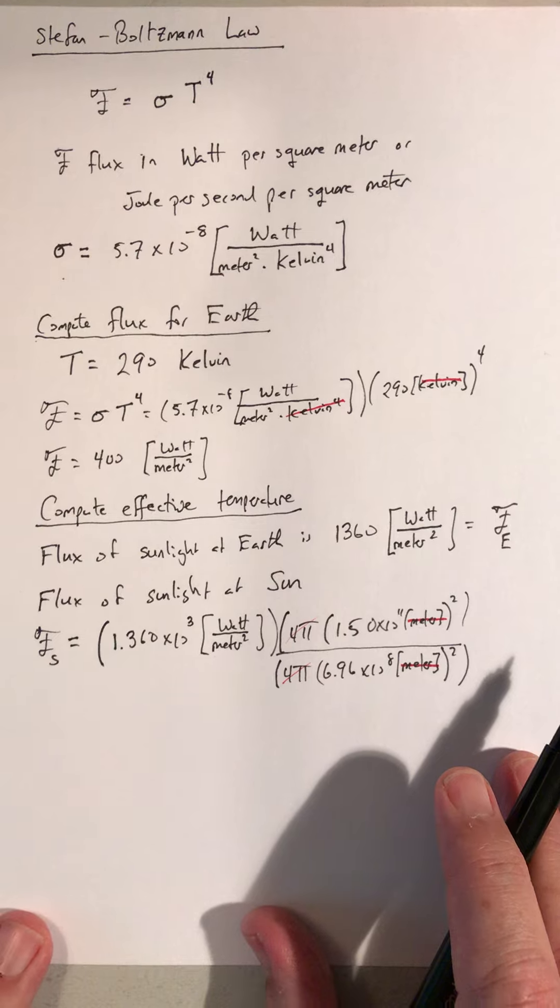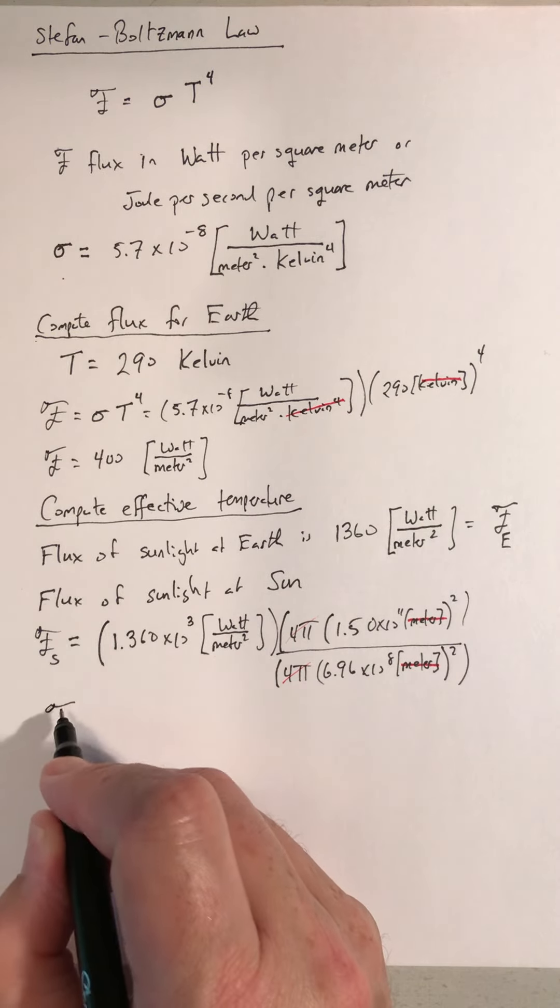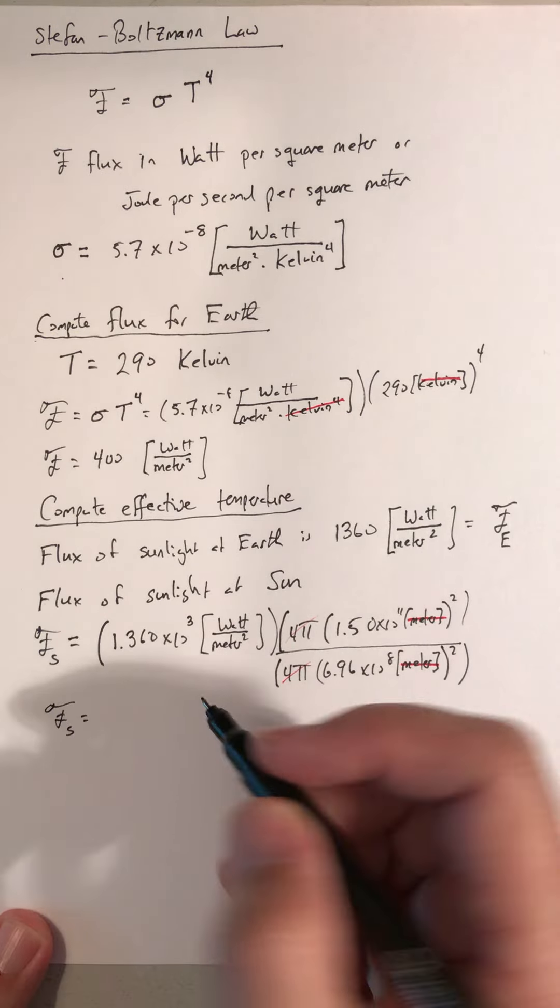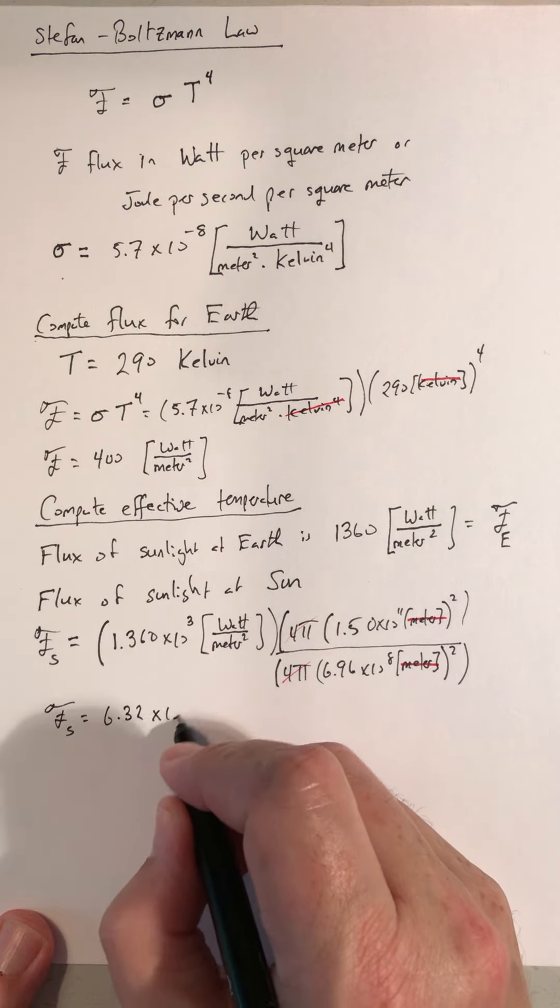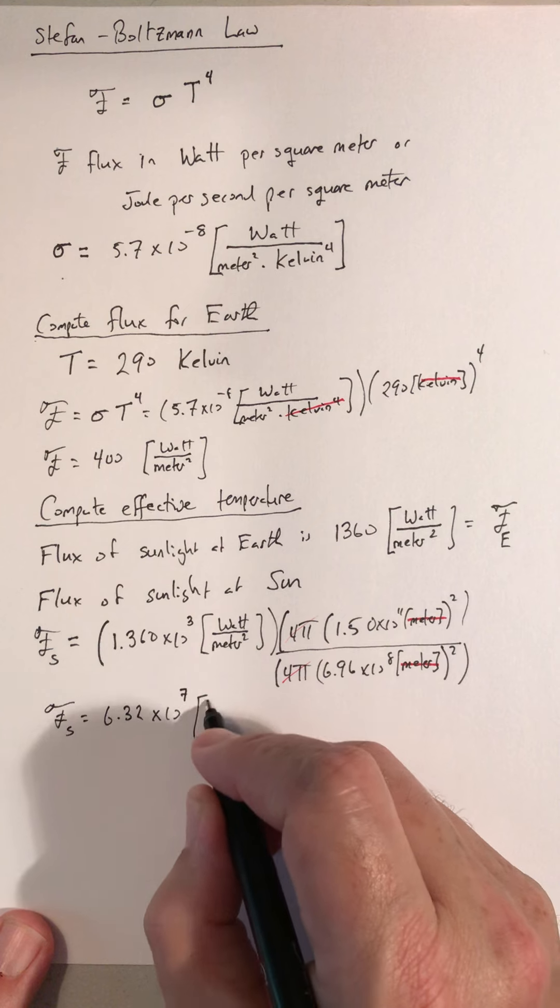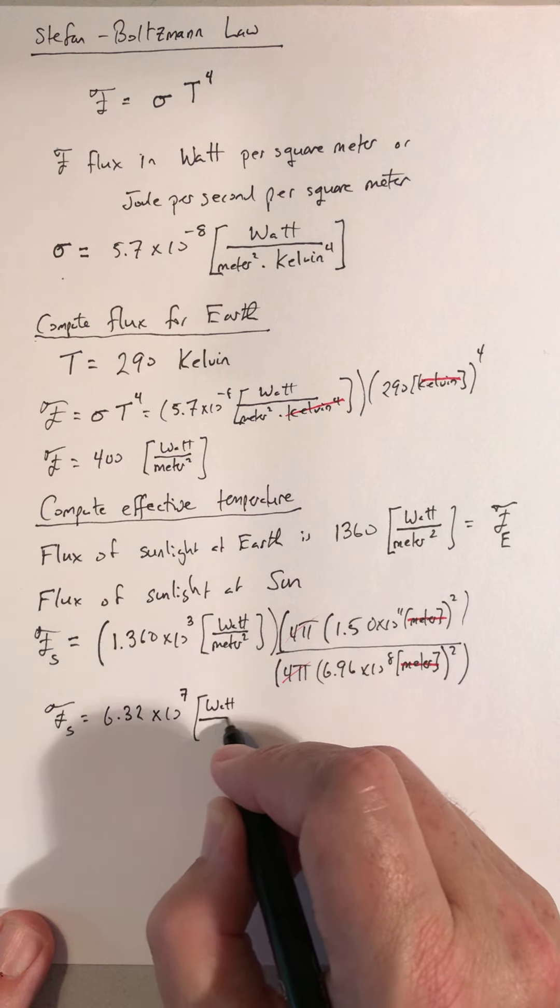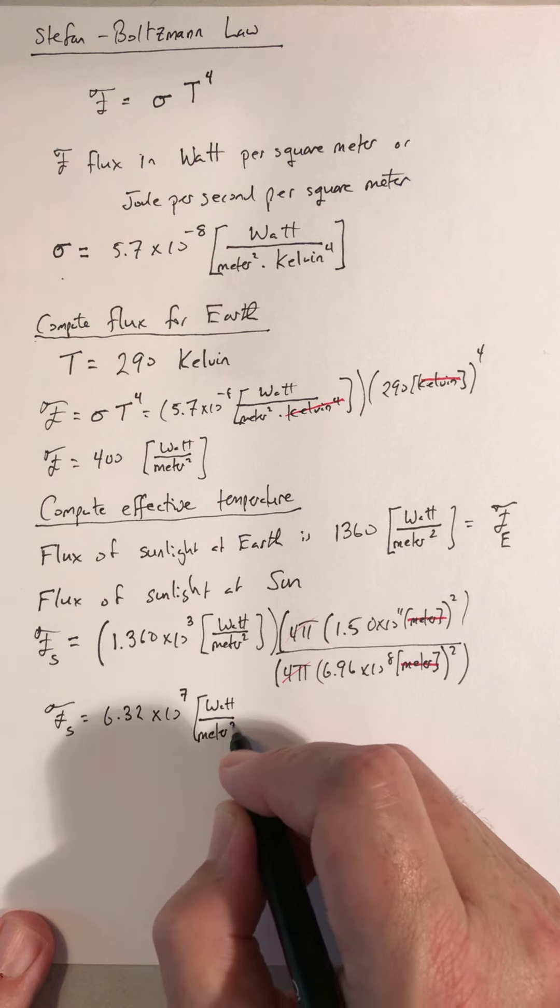So the flux of sunlight at the Sun, 6.32 times 10 to the 7th watts per square meter.